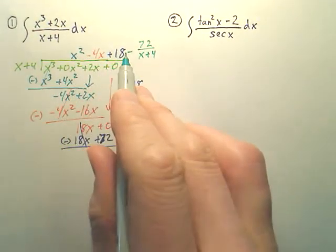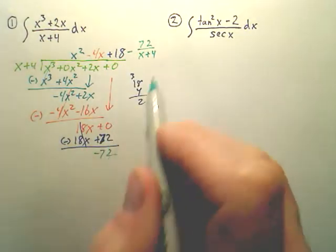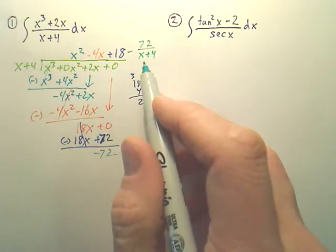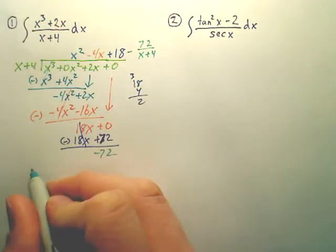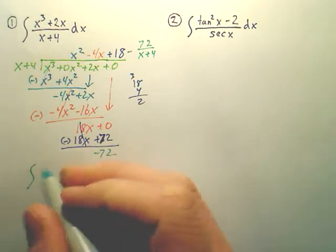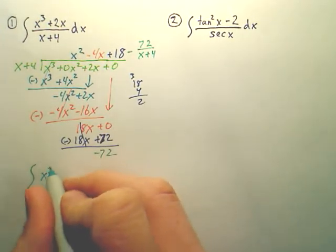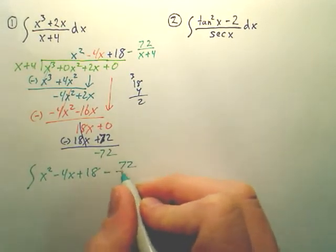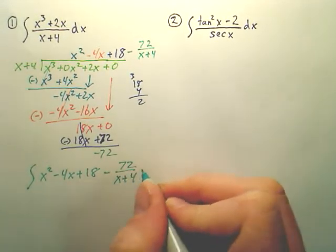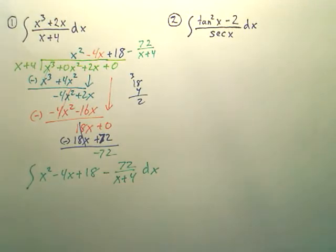So that's your answer. And then since it's a negative 72, it's minus. And the remainder over the divisor. That's your answer. Now our goal is to integrate that. And we can integrate the first three pieces very simply. The last piece is a natural log. Hopefully you can see the last one's going to be a natural log.